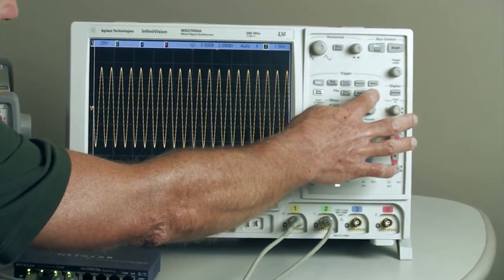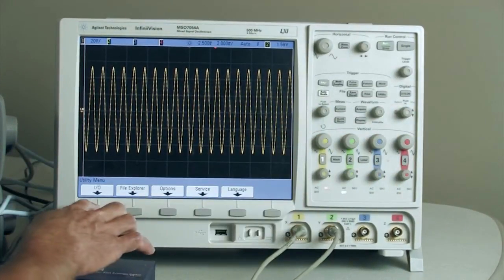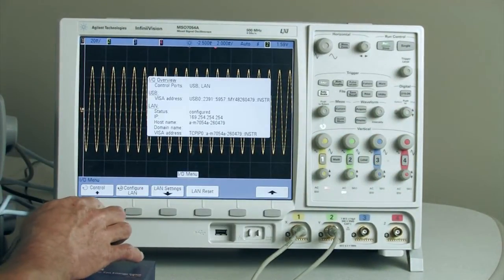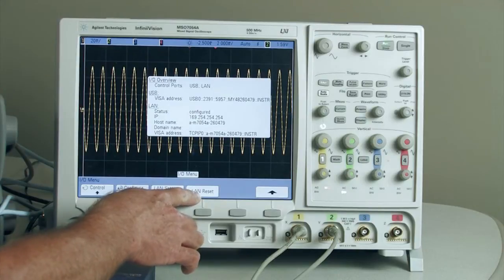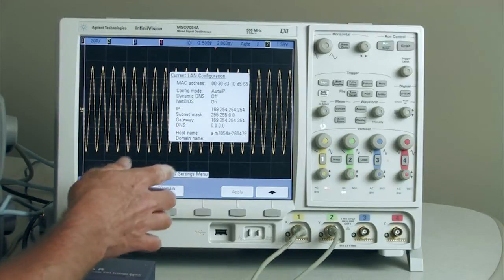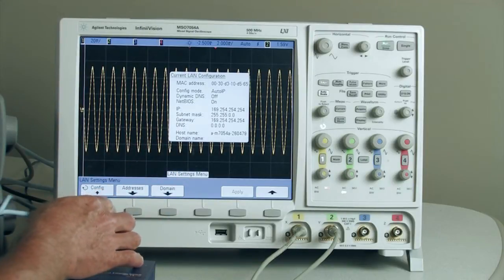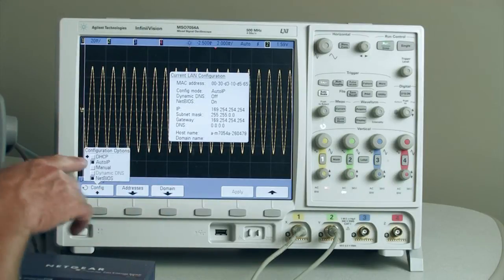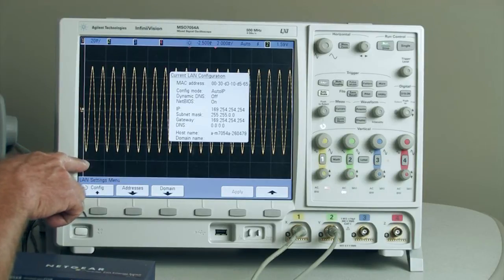All the instruments are basically the same. They have a utility menu. We want to pick the I.O. feature and here's the LAN reset button. On the oscilloscope, I notice it's best to actually set the oscilloscope to use the auto IP feature. So the way we do that is there's a selection between DHCP and auto IP. So I've selected the auto IP before doing our LAN reset.